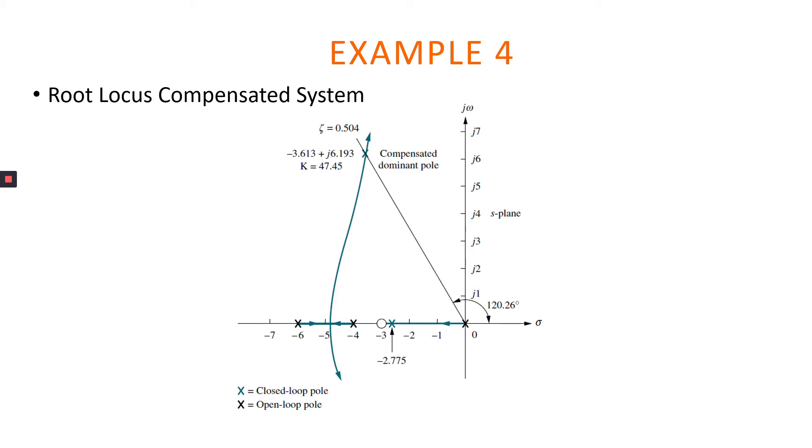And based on the closed loop transfer function calculation, we also have our third pole for the closed loop which is negative 2.775.